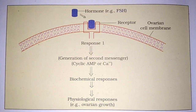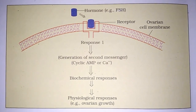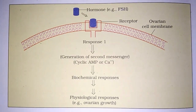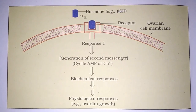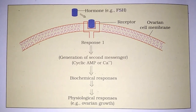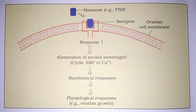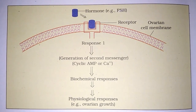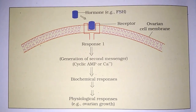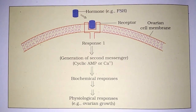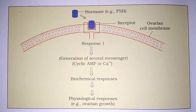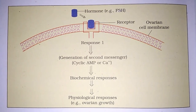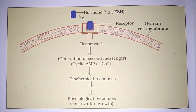Diagram samajhne se pehle batate hai ek baat — enzyme aur hormone mein kya difference hota hai. Enzyme jo hai woh jahan bante hai wahi utilize ho jaate hai. Kyunki enzyme jo hai woh heavier hote hai. Lekin hormone ki baat ki jaye toh hormone bahot light hote hai. Aur yahe reason hai ki agar pituitary gland mein koi hormone secret hua hai toh woh blood stream ke through travel karte hai.